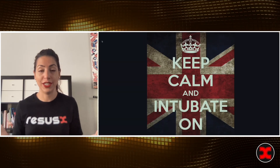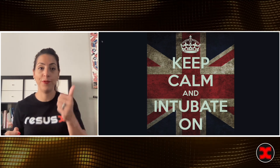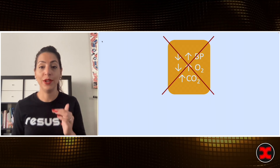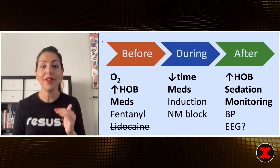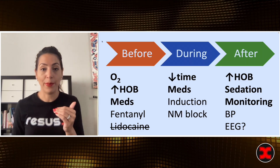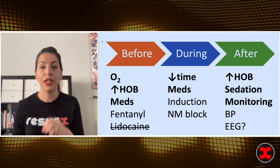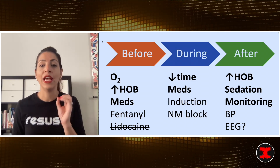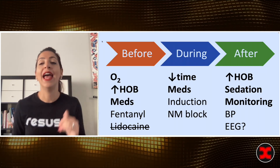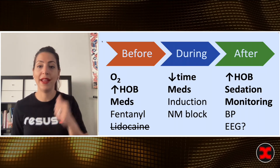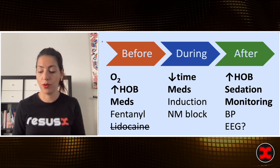This is my advice for the patient you need to intubate: just keep calm, intubate on, and make sure you have a plan for before, during, and after. If you can avoid that intubation, then do so. Before: elevate the head of the bed, pre-oxygenate, and pre-medicate with fentanyl. During: decrease the time so they don't become hypercarbic; use the meds for induction and neuromuscular blockade — ketamine or ketofol gets my vote. Afterwards: elevate the head of the bed, sedate them, and monitor blood pressure frequently with clear goals and possibly an EEG.